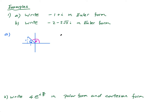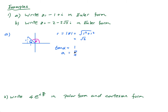Let's get r first. r is the magnitude of z, which is the square root of 1² + 1² = √2. So r = √2. Then I'll get α first. tan α = 1, so α = π/4. Therefore θ = π - π/4 = 3π/4.